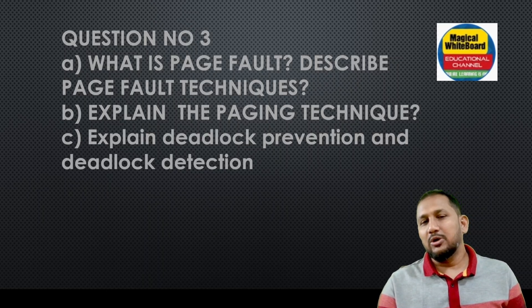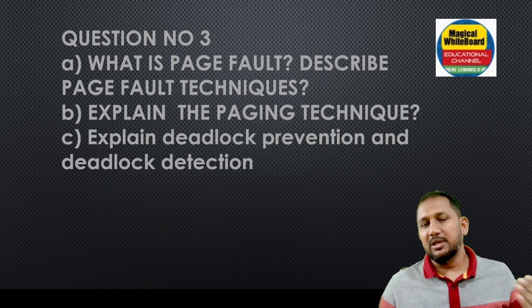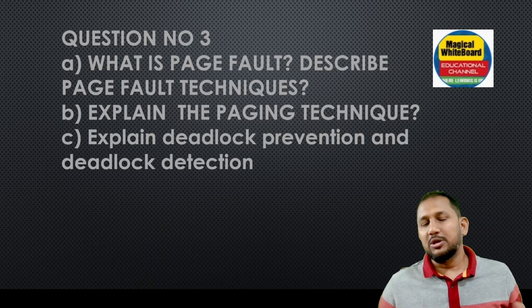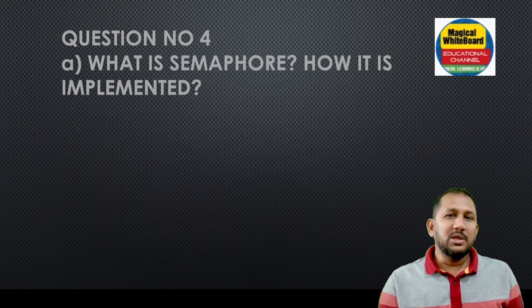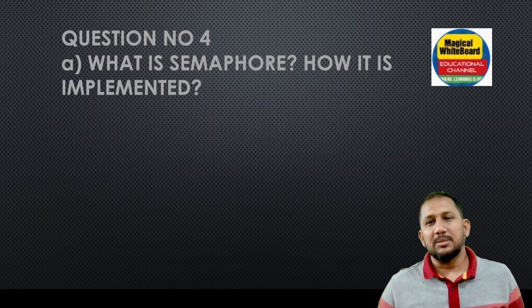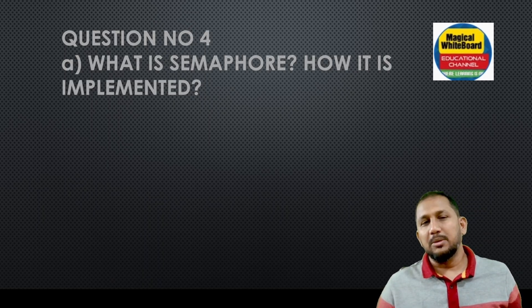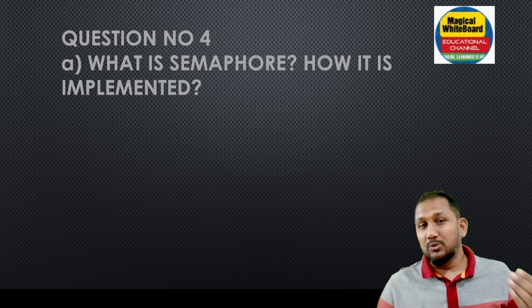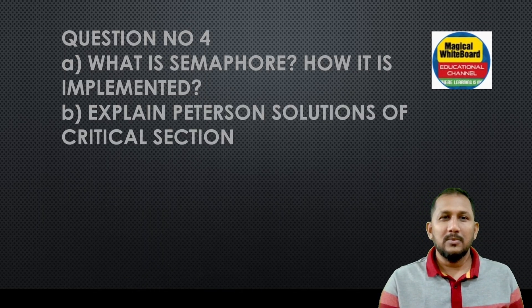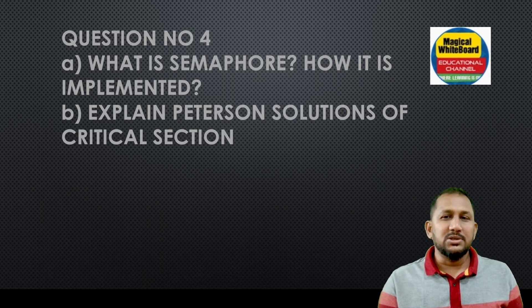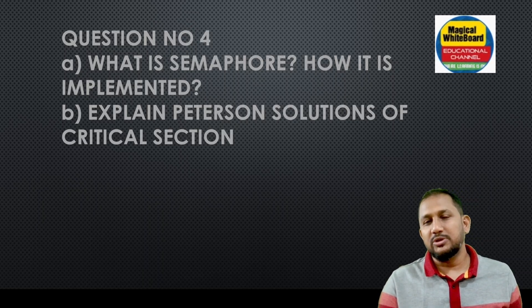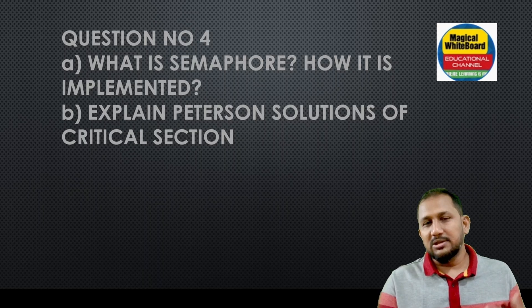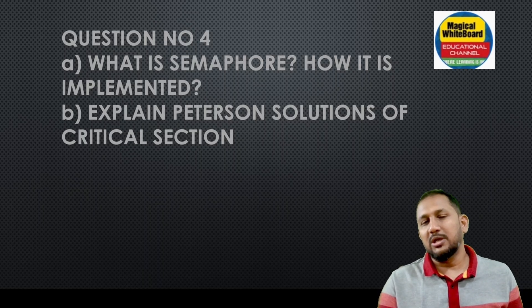Deadlock prevention and detection — describe the mechanisms for prevention and detection. Question number four: what is a semaphore and how is it implemented? Explain the semaphore and give the implementation code.